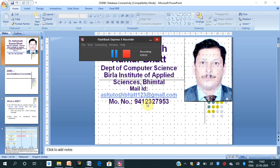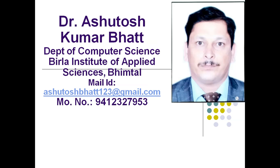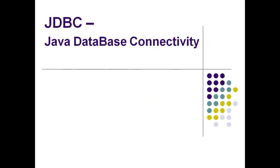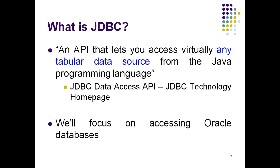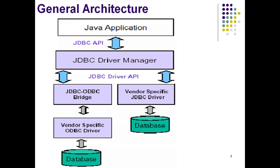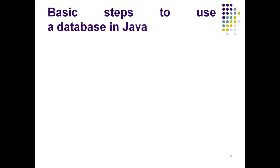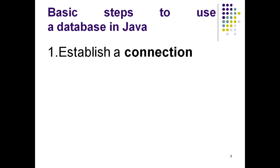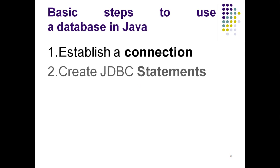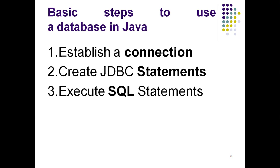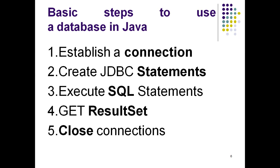Welcome back to this lecture on JDBC - Java Database Connectivity. This is a continuation of the previous lecture where I explained the five different steps of database connectivity: first, establishing a connection; second, creating a JDBC statement; third, creating an SQL statement; fourth, getting the result set; and finally, closing the connection.